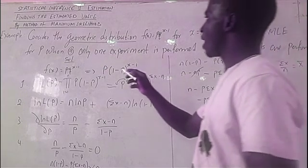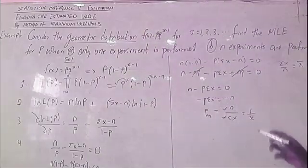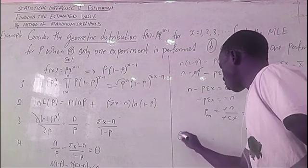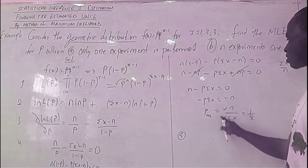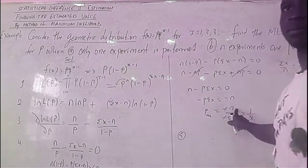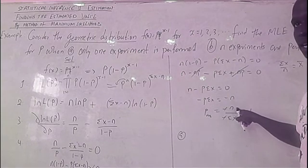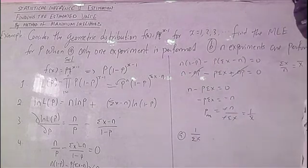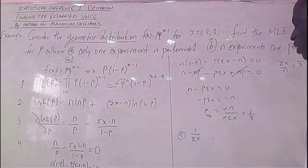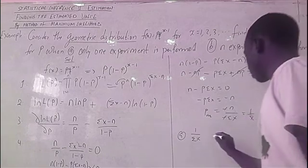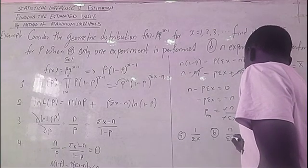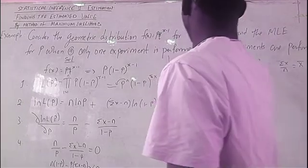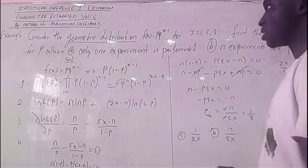Now we answer the specific parts. Part (a): when only one experiment is performed, n = 1, so p̂ = 1 over summation x. Part (b): when n experiments are performed, p̂ = n over summation x. And that is the final answer. That is how to find the estimated value by method of maximum likelihood.